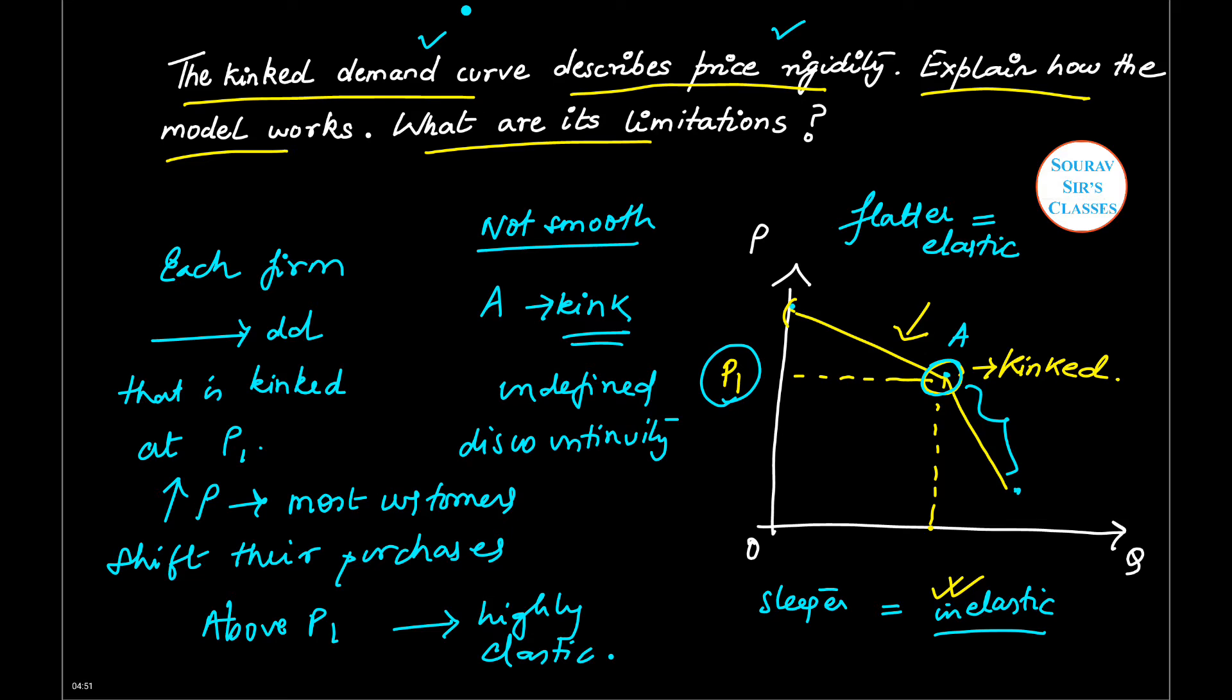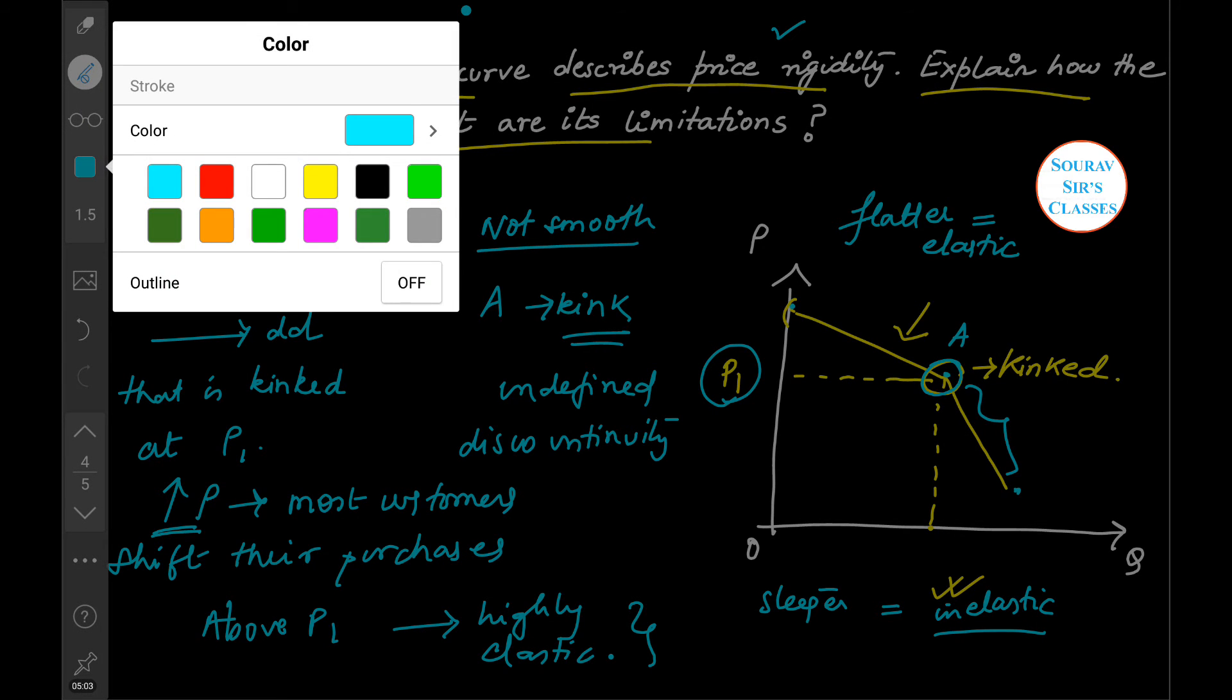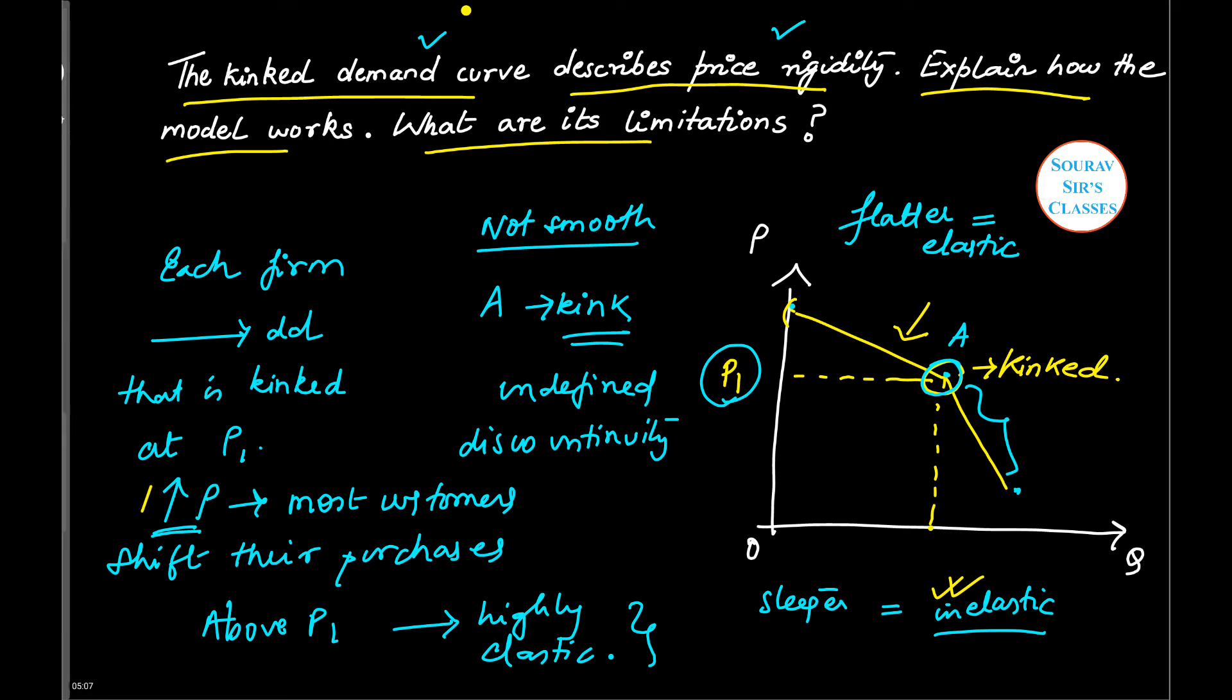And if the firm lowers the price, the competitors will also lower their prices. So prices of other firms will also fall. Other firms also reduce their prices. And this implies that the demand curve is more inelastic. So below P1, the demand curve will be more inelastic for price decrease.